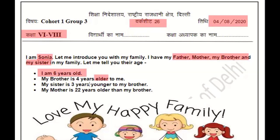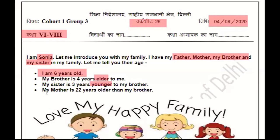My sister is 3 years younger than my brother. Younger means we subtract 3. Brother's age is 10, so sister's age is 10 minus 3 equals 7 years. And my mother is 22 years older than my brother, meaning mother's age is 10 plus 22 equals 32 years.